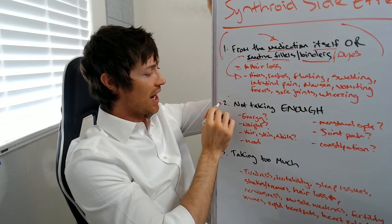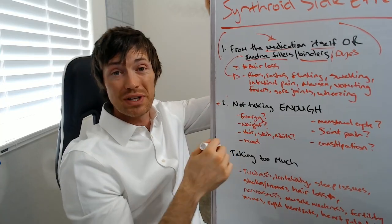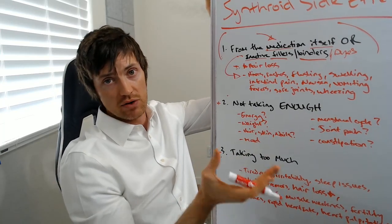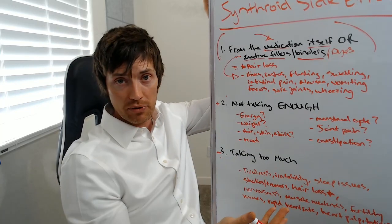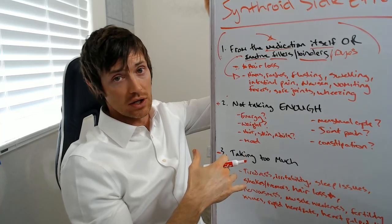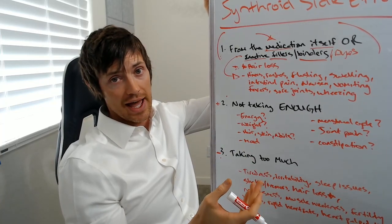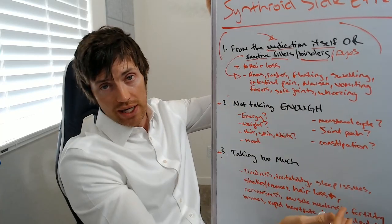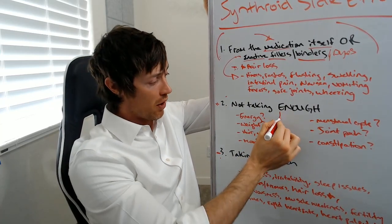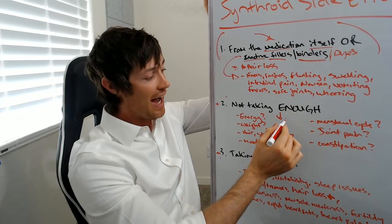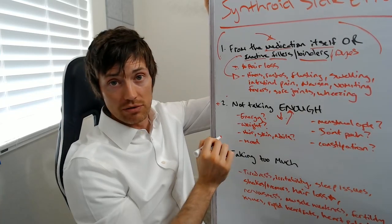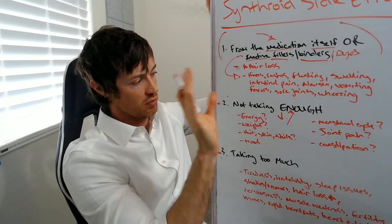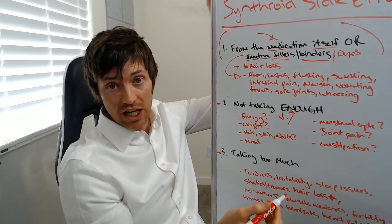Now the second area could be related to simply not taking enough Synthroid. This happens a lot. I hear this from thyroid patients. They'll say, well, I have hypothyroidism and I gained a lot of weight from my thyroid being low. And I took Synthroid and I gained a little bit of extra weight. So they say it must be the Synthroid that caused the weight gain. Well, not necessarily. It could have been that your thyroid hormone got worse and your Synthroid dose wasn't high enough to bring that back up to a normal level. So it wasn't the Synthroid that caused the problem. It could just be the fact that you weren't taking enough.